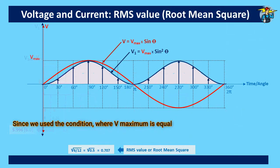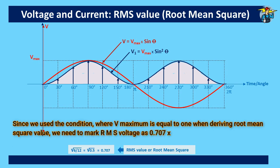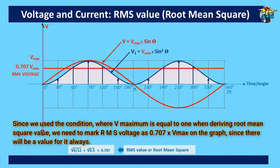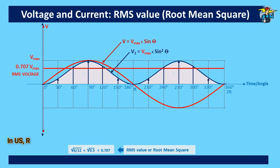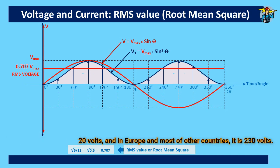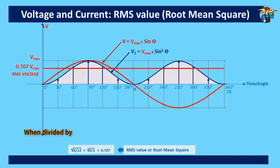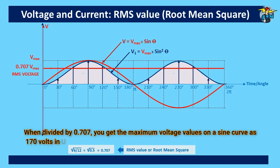Since we used the condition where V_max is equal to 1 when deriving root mean square value, we need to mark RMS voltage as 0.707 × V_max on the graph, since there will be a value for it always. In the US, RMS voltage is 120 volts, and in Europe and most other countries it is 230 volts. When divided by 0.707, you get the maximum voltage values on a sine curve as 170 volts in the US and 325 volts in Europe.